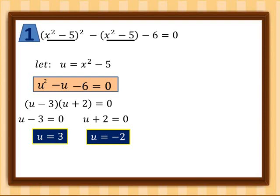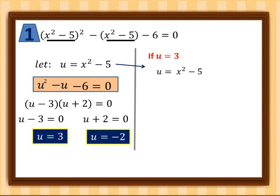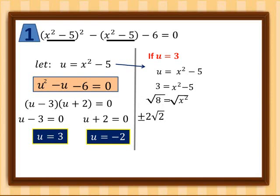These are not yet the solutions of our equation — we use the values of u to solve for x. If u equals three, we substitute back into u = x² - 5, giving us three equals x² - 5. Transposing the negative five, we get x² equals eight. Taking the square root of both sides gives x equals positive and negative two square root of two.